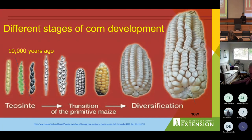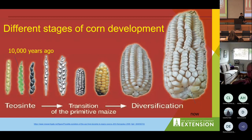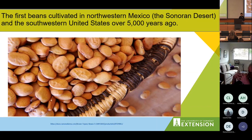Let's review the three sisters' history in order of appearance. Ten thousand years ago there was no such thing as corn — just a wild grassy plant called Teosinte. This plant looked a little like the corn we know today, but ancient farmers in what is now Mexico cultivated maize by choosing which kernels to plant.